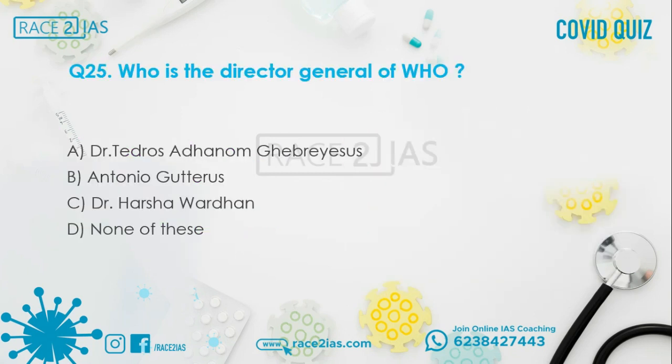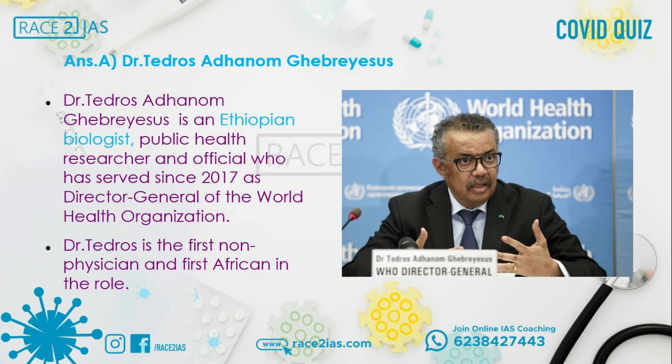Question 25: Who is the Director General of WHO? Option A: Dr. Tedros Adhanom Ghebreyesus. Option B: Antonio Guterres. Option C: Dr. Harsh Vardhan. Option D: None of these. The right answer is Option A, Dr. Tedros Adhanom Ghebreyesus. He is an Ethiopian biologist, public health researcher and official who has served since 2017 as Director General of the WHO. He is the first non-physician and first African in the role.